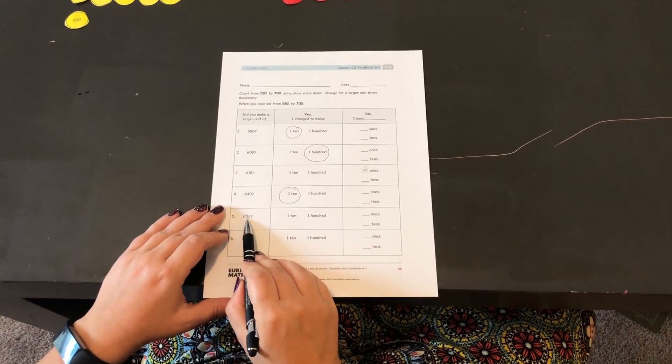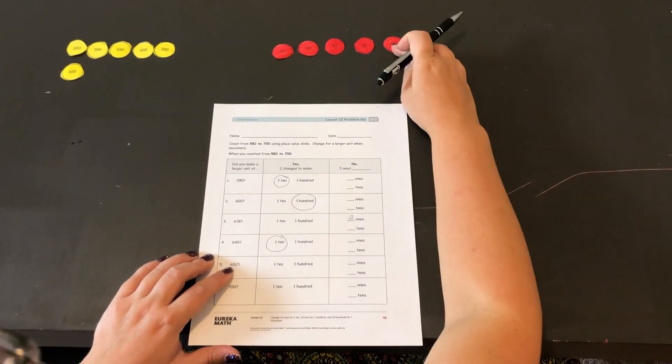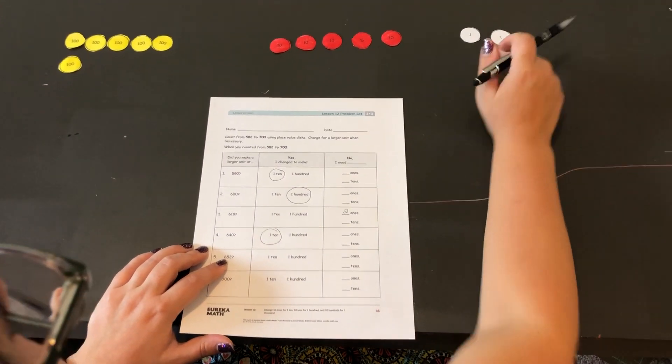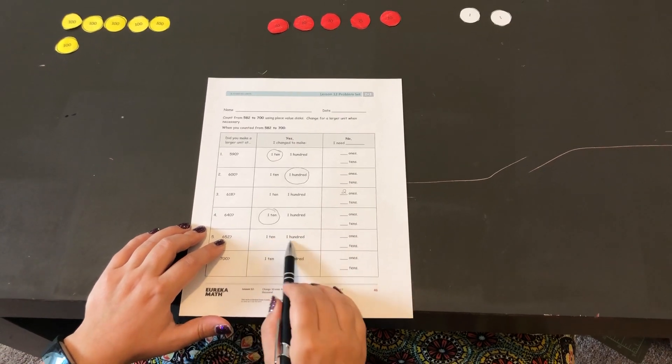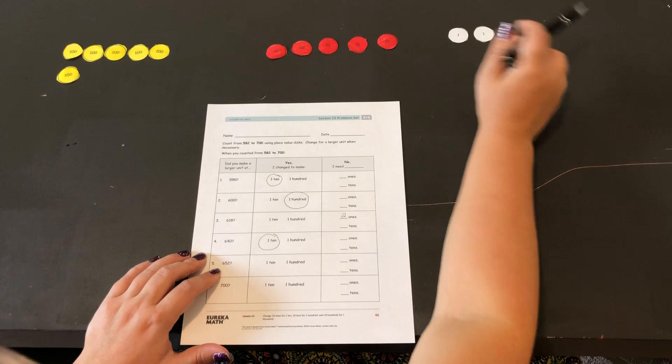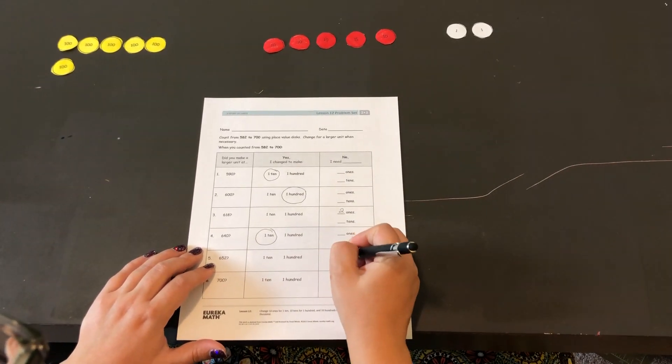How about getting to 652? So I'm at 650, 651, 652. We did not make a new unit. But if I wanted to, I would need to add eight more ones to make the next ten.